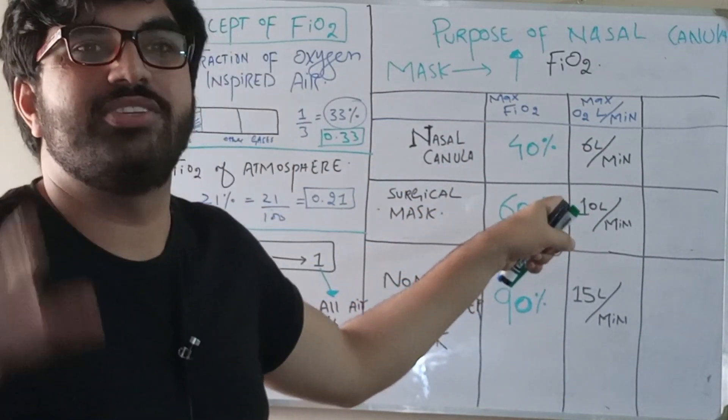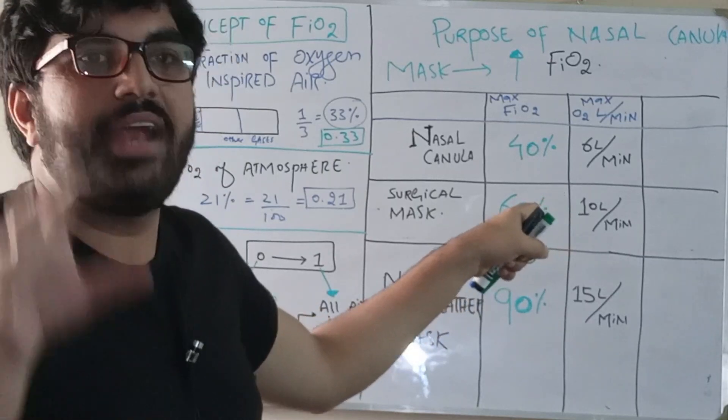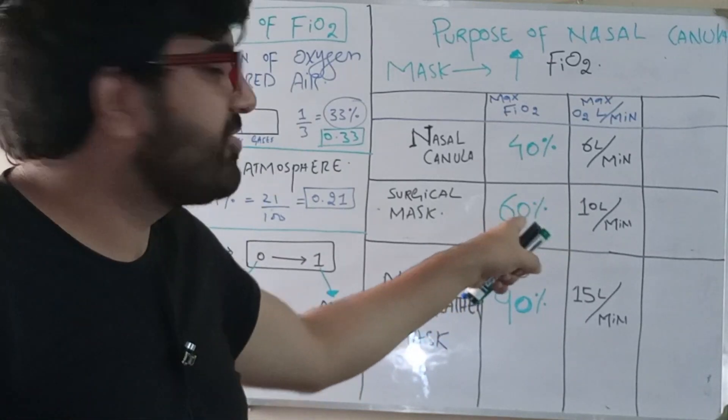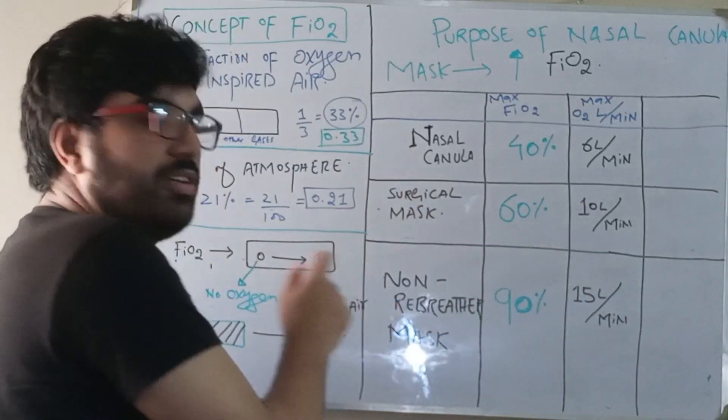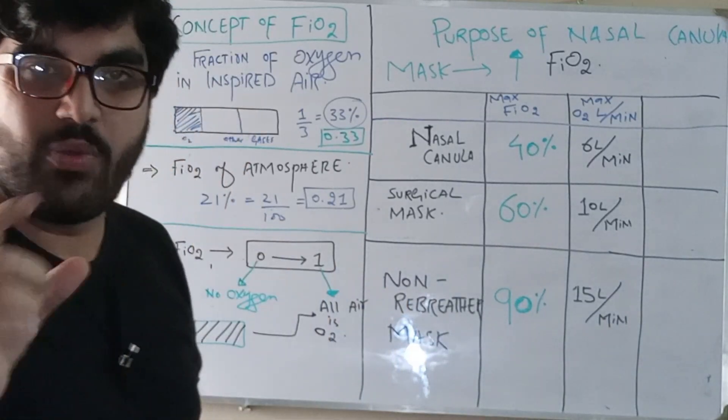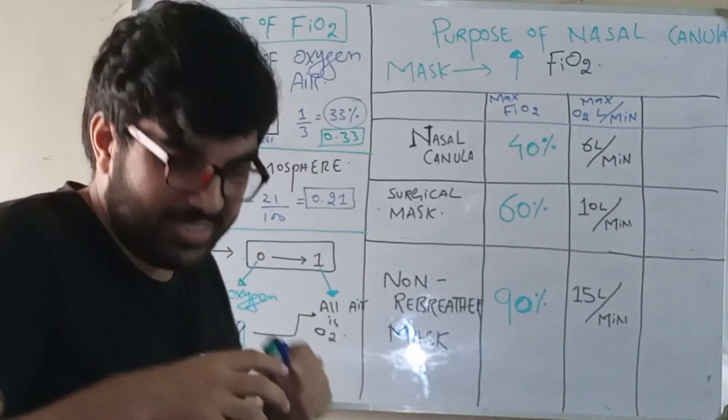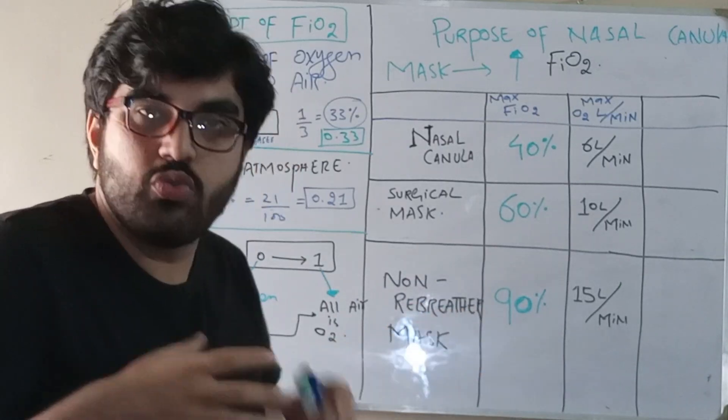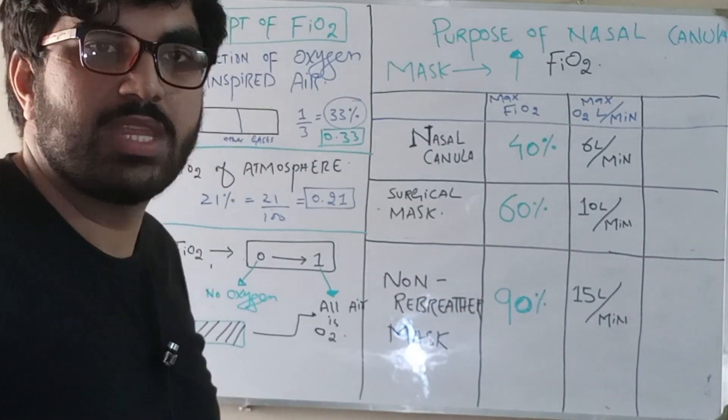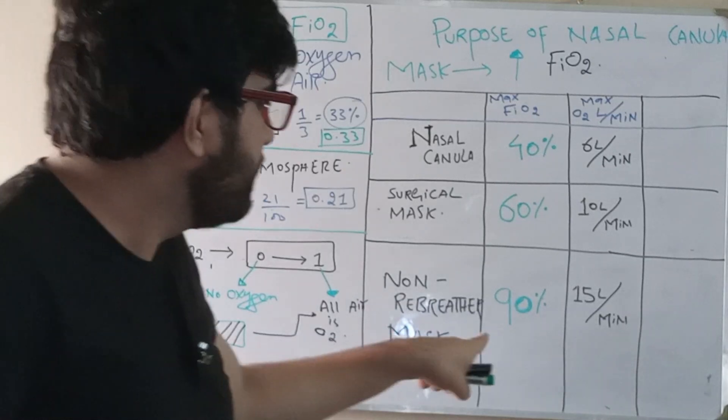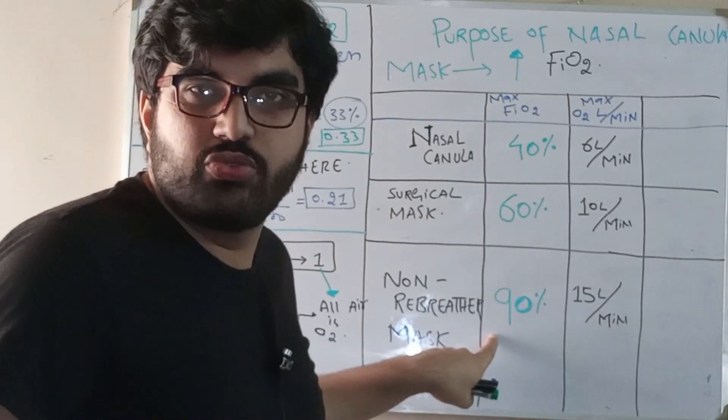The next step is non-rebreather mask. Now it is said the non-rebreather mask is giving the FiO2 equivalent to ETT and endotracheal intubation.